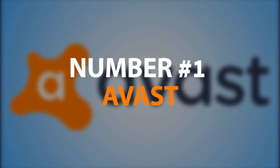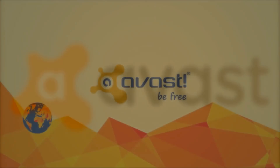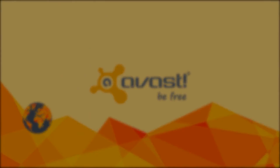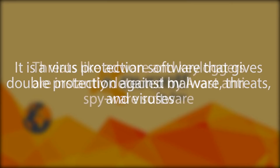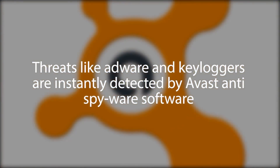Number 1: Avast. It is a virus protection software that gives double protection against malware, threats and viruses. Threats like Adware and Keyloggers are instantly detected by Avast anti-spyware software.